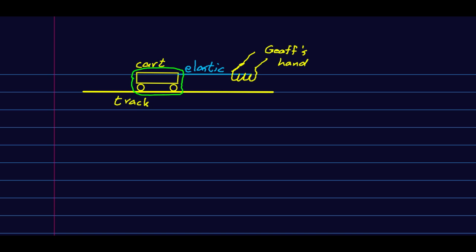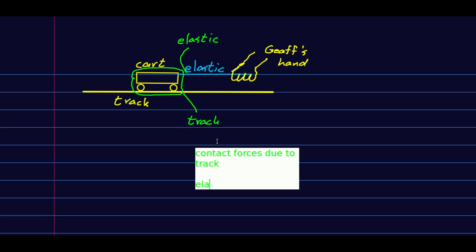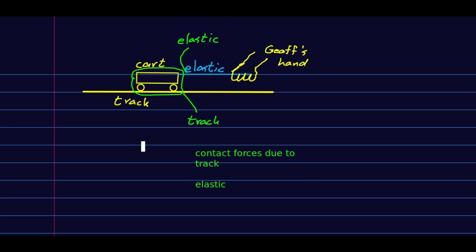I'm going to draw this little circle around the cart and the intent of this is that wherever the circle crosses some other object that's telling us there's a point of contact. So the cart is in contact with the track and it's in contact with the elastic band, and so all the contact forces will be due to those. We have contact forces due to the track and due to the elastic, and now we just have to think about what those are.